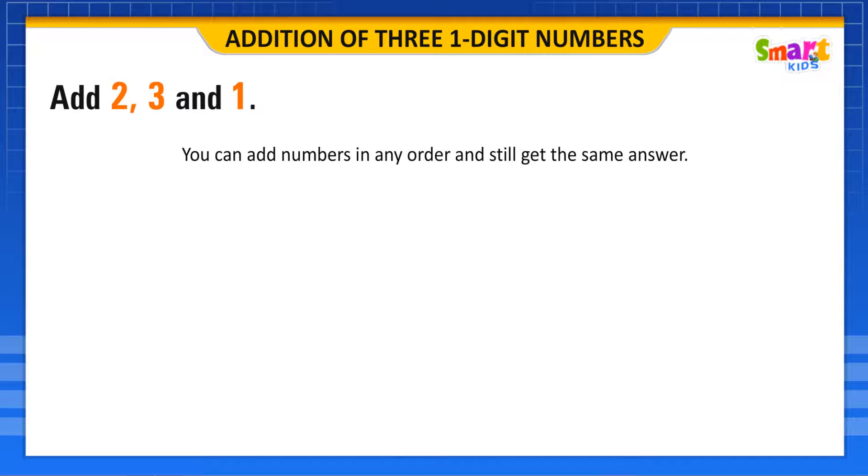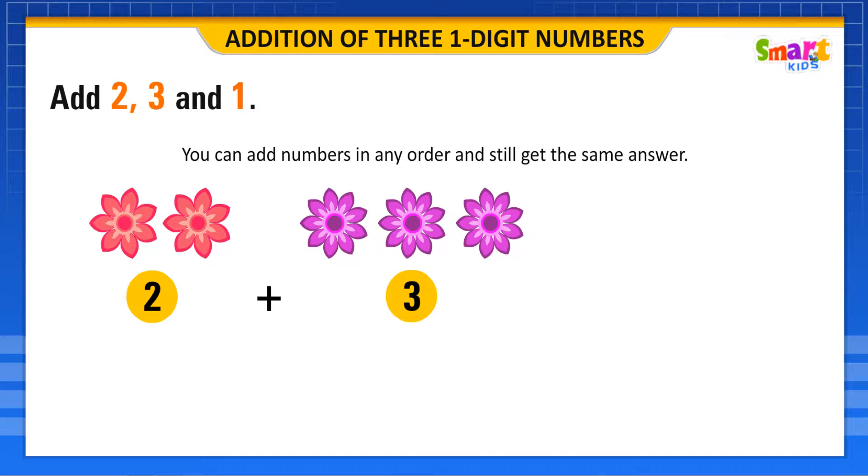You can add the numbers in any order and still get the same answer. Let us verify it. To add 2, 3 and 1, add the first two numbers, 2 and 3. 2 plus 3 is equal to 5.